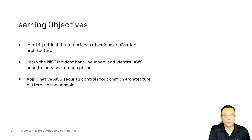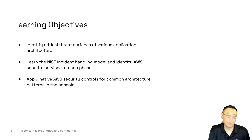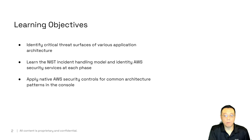We also want to learn about the NIST incident handling model, the SANS model for incident handling and response, and how Amazon Web Services security services work with each other at each phase of this model. We also want to apply AWS security controls for common architecture and patterns in the console with automated remediation as part of our demonstration.